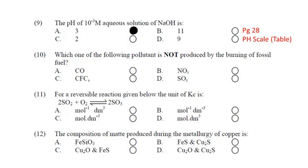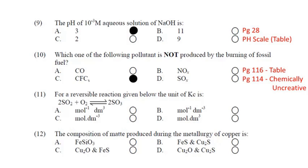Question number 10: Which one of the following pollutants is not produced by the burning of fossil fuels? بہت آسان ہے — page 116 پہ table given ہے جبکہ page 114 پہ لکھا ہے کہ یہ chemically unreactive ہے، یعنی fossil fuels سے create نہیں ہو سکتا — answer is CFC (chlorofluorocarbons)۔